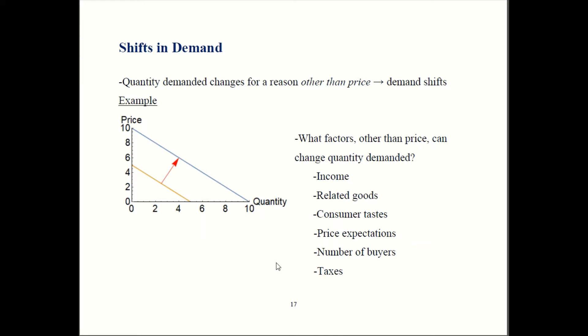Your book gives a list. One factor is income - that can affect people's willingness to buy stuff. Related goods can also change people's willingness to buy, their demand curve. So if a good that's similar changes its price or quantity, that can influence another market.